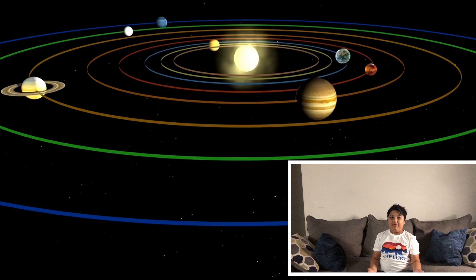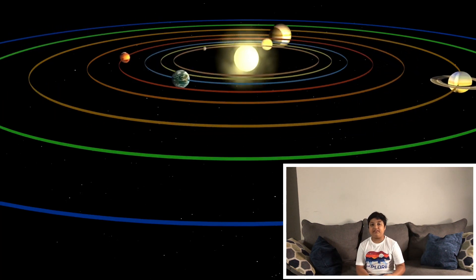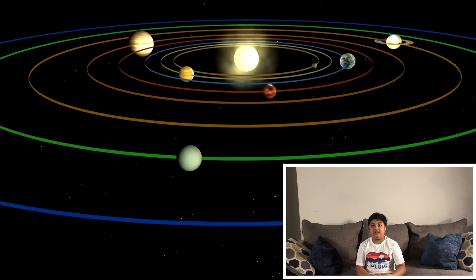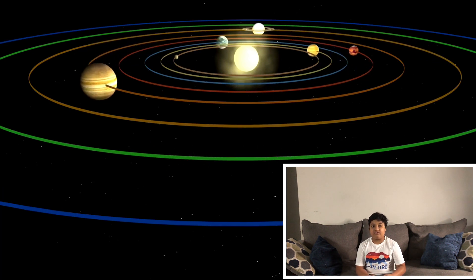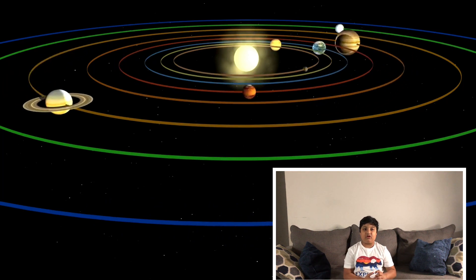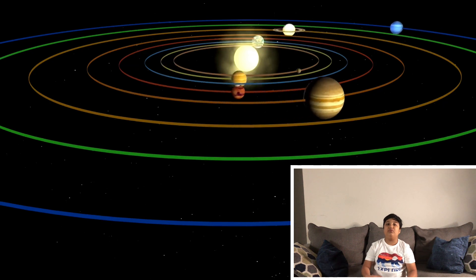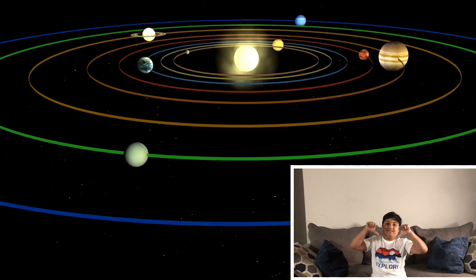We call it the solar system because everything in it is centered on the Sun. The Sun is a star just like many stars that you can see in the night sky, just many times closer to us.